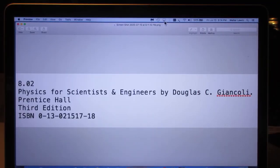This is the book that I used for 8.02: Physics for Scientists and Engineers by Douglas John Coley, Prentice Hall. I used the third edition. In the assignments I use often problems from Jack Coley. I reference the number of the problem and often the pages as well.